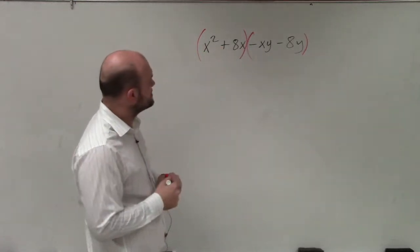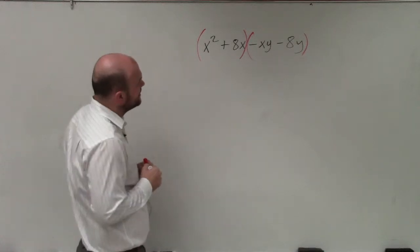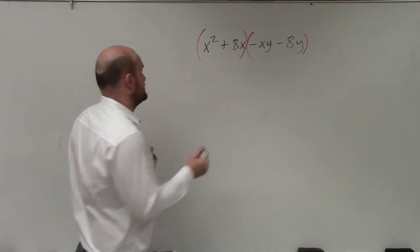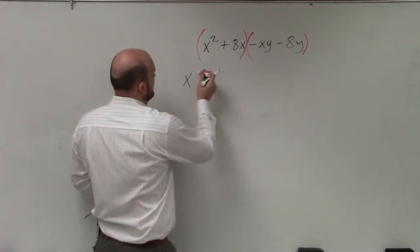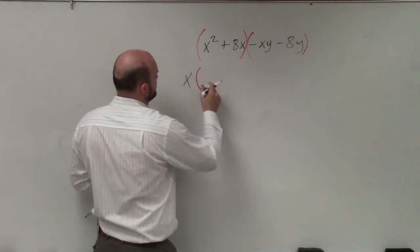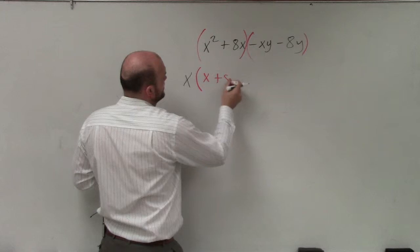So when I look at x squared plus 8x, I can see that my common factor is going to be x. So if I factor out an x, then I'm going to be left with an x plus 8.